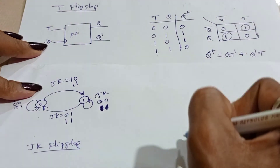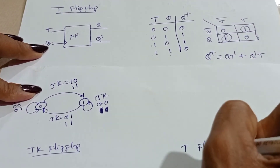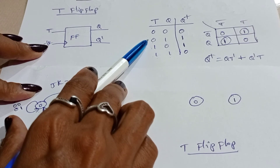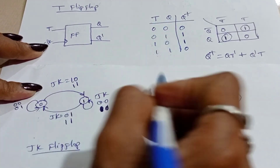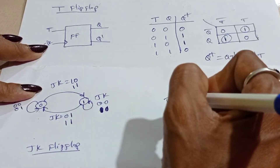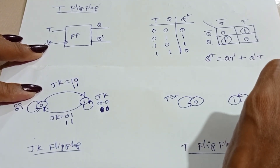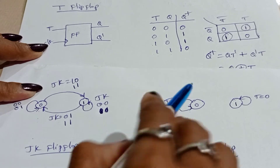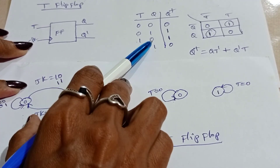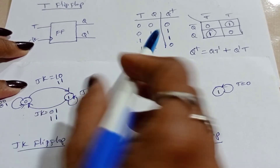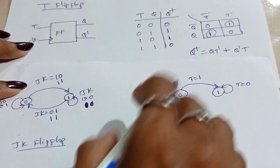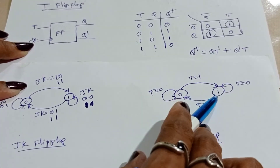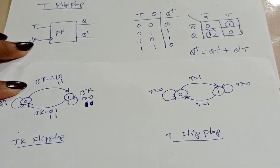Finite state machine for T flip-flop. When T is 0, it will be in the same state — it makes a loop, staying in the same state without changing. When T is equal to 1, it is changing from 0 to 1 as well as from 1 to 0. This is the finite state machine for T flip-flop.